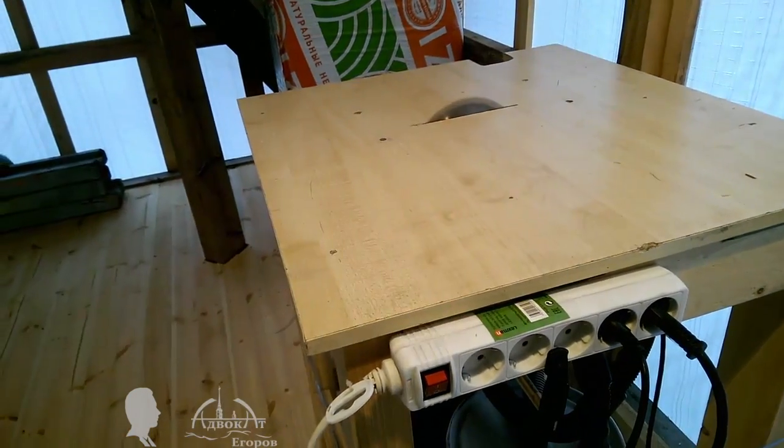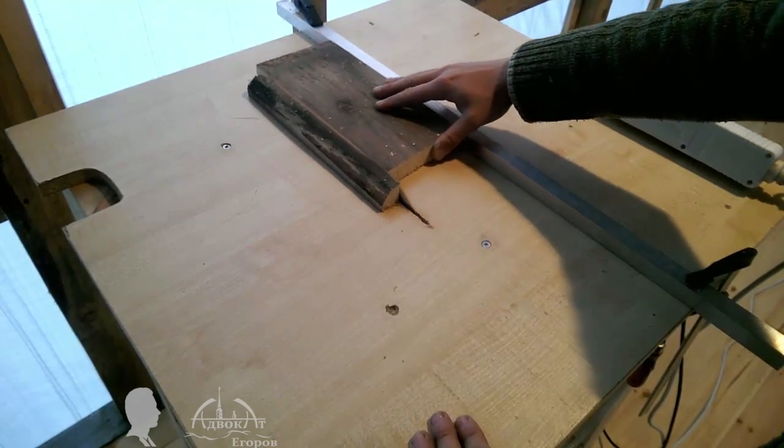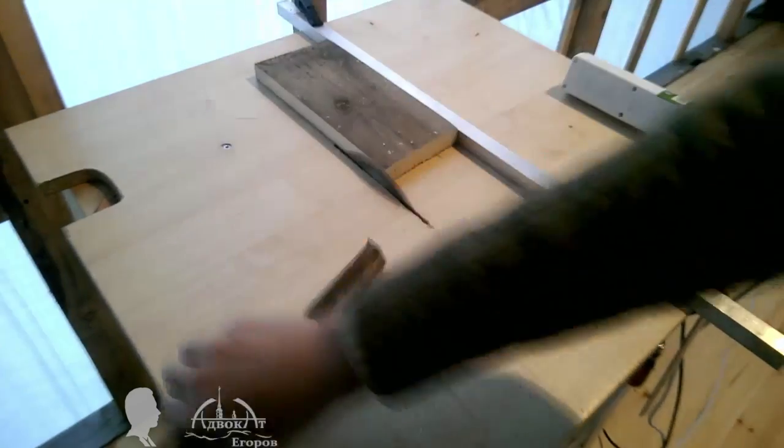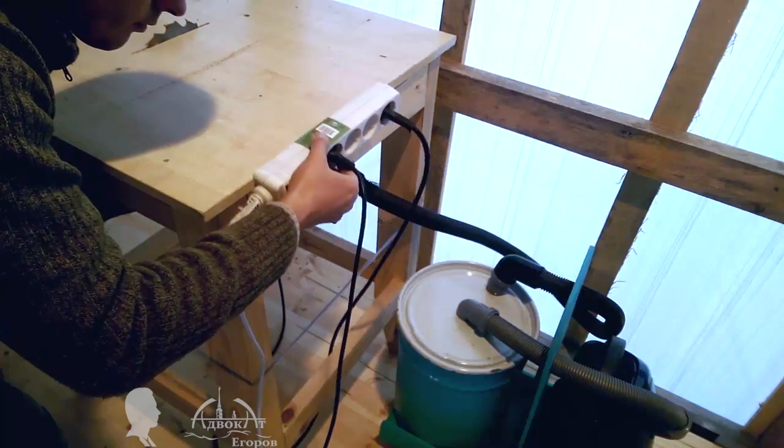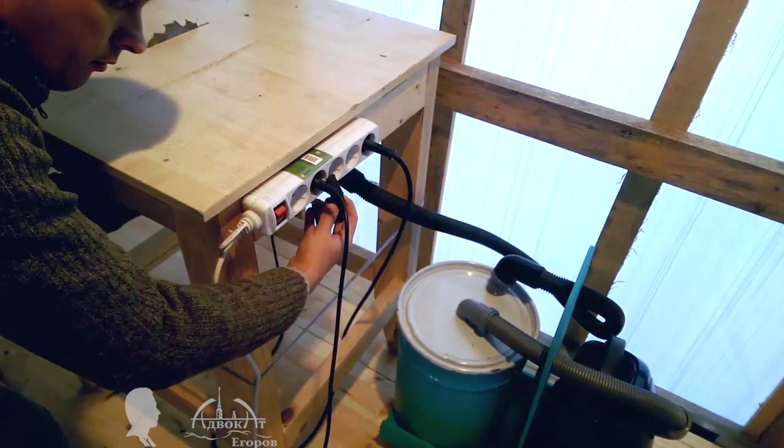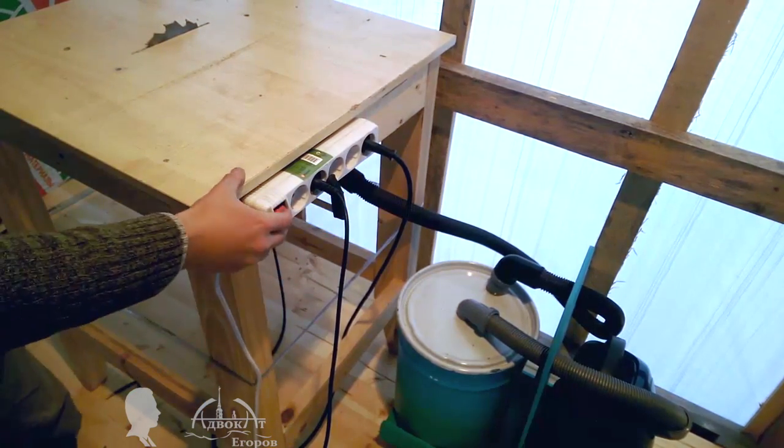I noticed a significant decrease in dust production while using it with my table saw. It is quite convenient to plug both the vacuum and machinery into a power strip since its on-off switch can control them simultaneously.